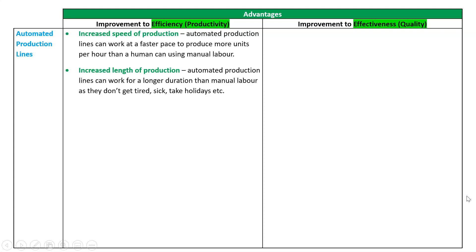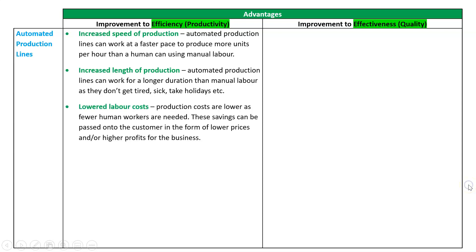Increased length of production — not only can a machine work faster, it can work for longer. It doesn't get sick, it doesn't get tired, it doesn't take holidays, it doesn't need to go home at 5 o'clock, so we can run production 24/7. We also have greater efficiency because we have a lower input cost from humans — there are lower labor costs, and more automation means fewer humans.